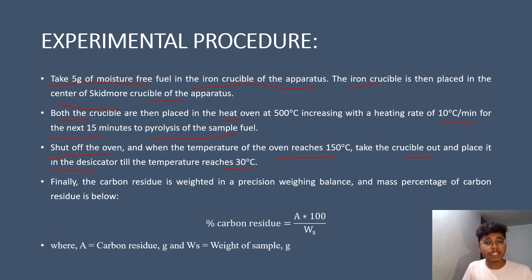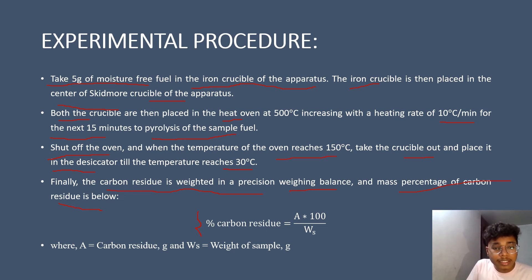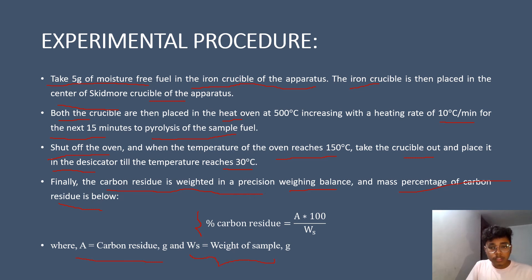After the temperature reaches 30°C, the carbon residue is weighed on a precision weighing balance, and the mass percentage of carbon residue is calculated using the equation: percentage carbon residue = (A × 100) / Ws, where A is the carbon residue in grams and Ws is the initial weight of the sample. This is how the percentage carbon residue in the sample is calculated. That concludes our second topic.